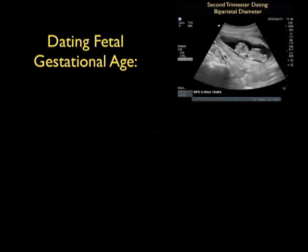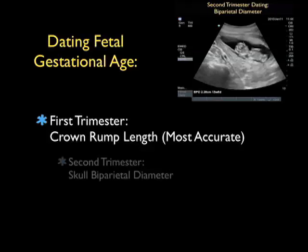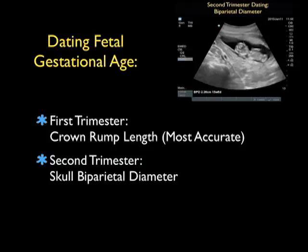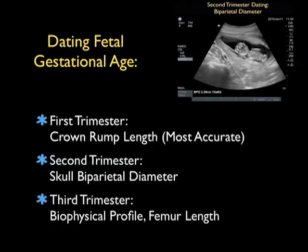The first concept we'll focus on is dating fetal gestational age. In the first trimester, we're going to use an assessment of the crown rump length. Interestingly, dating in the first trimester is actually probably the most accurate during all phases of pregnancy, as there's a difference in the growth curve as the fetus develops. In the second trimester, we'll measure the skull biparietal diameter. And in the third trimester, the dating is composed of a biophysical profile, focusing on the femur length as well as other biophysical measurements.